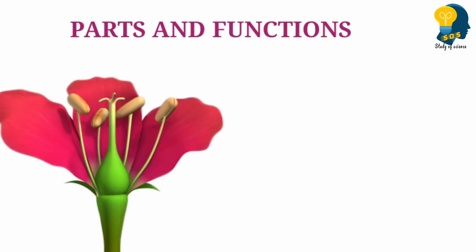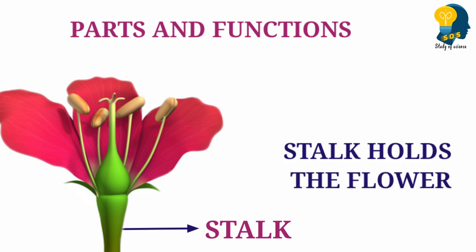Here we have the hibiscus flower, which is also called as the china rose. So, let's begin from the posterior region. The first part is the stalk. You can observe the stalk here. This stalk is looking like a tube — it is a tube-like structure. So, what is the function of the stalk?